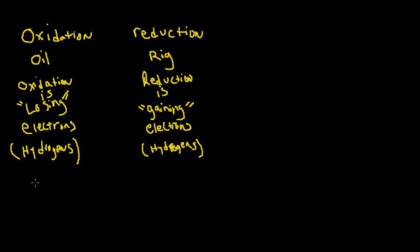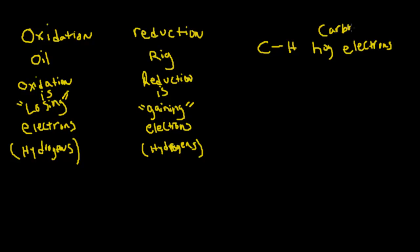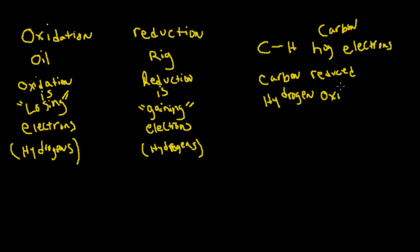Let's go through and give some basic examples. Let's say we have a carbon bonded with a hydrogen. Carbon is a lot more electronegative than hydrogen, so therefore it's going to hog the electrons. So carbon will hog the electrons from hydrogen — carbon is going to be reduced and hydrogen is going to be oxidized.